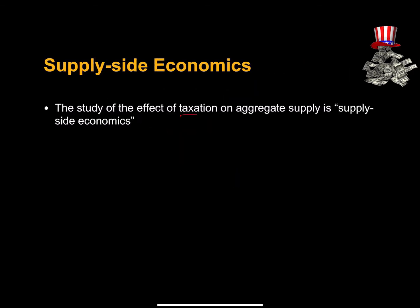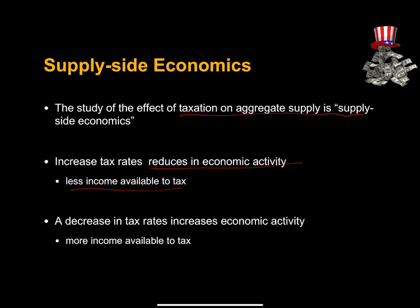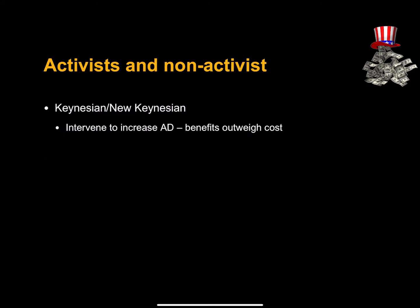The study of the effect of taxation on aggregate supply is sometimes referred to as supply-side economics. The punchline is that an increase in tax rates reduces economic activity, leaving less income available to tax. If we flip this around and try to stimulate the economy with a decrease in tax rates, a decrease in tax rates should increase economic activity, providing more income available to tax. The problem is that this tax cut has to be permanent — if it is a temporary tax cut, it will mainly have a stimulating effect on aggregate demand, without any long-run supply-side effects.